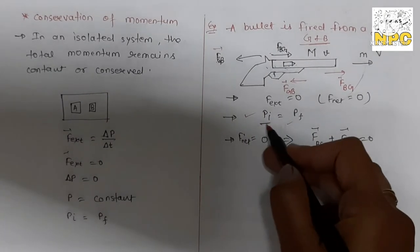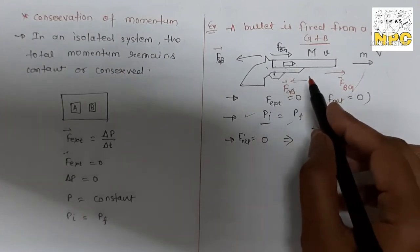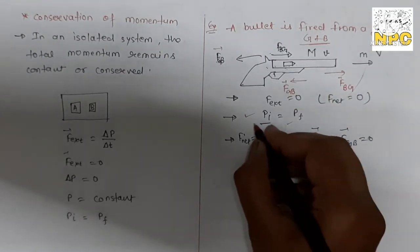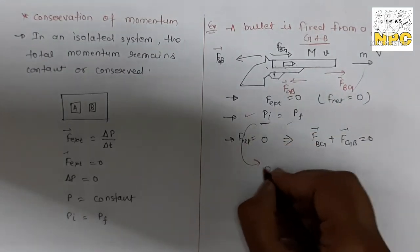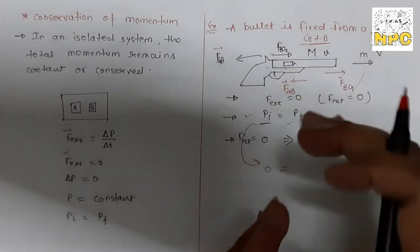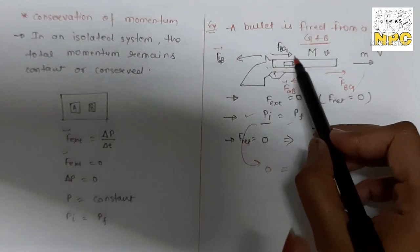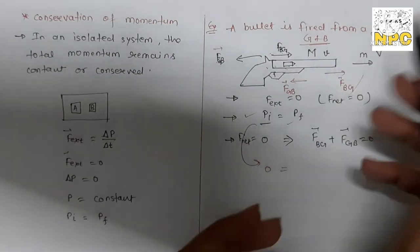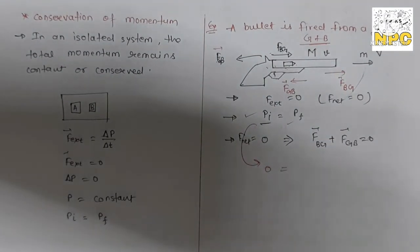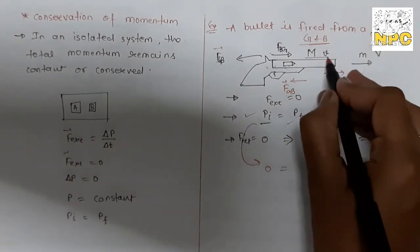Initially, the gun and bullet are at rest, so the initial momentum is zero. After firing, the bullet moves forward and the gun recoils backward. The final momentum of bullet plus gun must equal the initial momentum, meaning the total momentum is conserved.